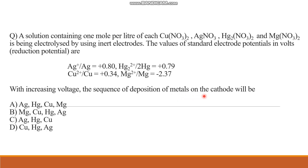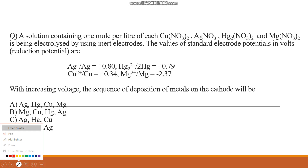We have to find which sequence is followed for depositing metals on the cathode with increasing voltage. We know that reduction always takes place at the cathode — the anode is for oxidation and the cathode is for reduction.